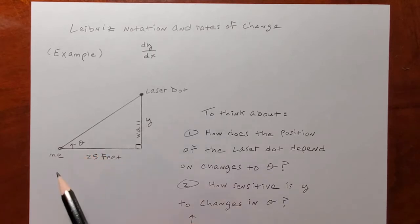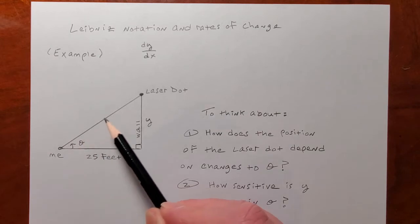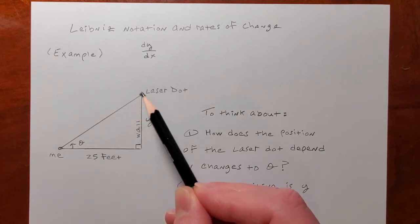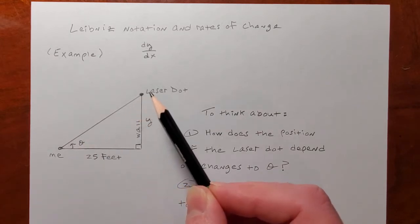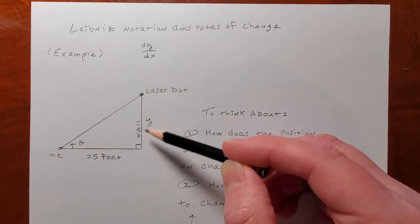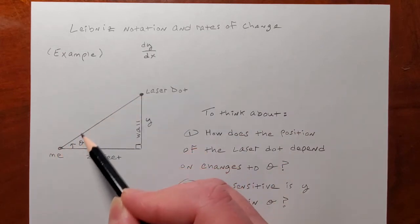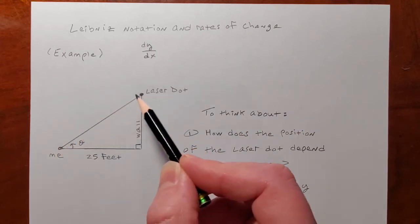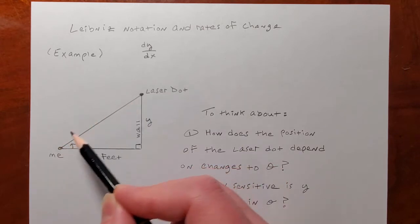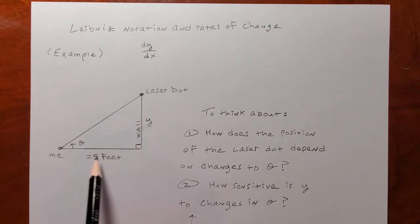Suppose that I stand close to a wall — let's say 25 feet — and that distance will be fixed. I shine a laser pointer at the wall, and it makes a dot on the wall. The dot is y feet from the ground. As I shine the laser pointer at the wall, that laser light travels at some direction theta with respect to this horizontal line.